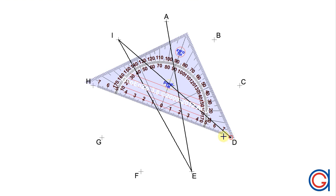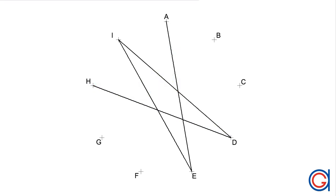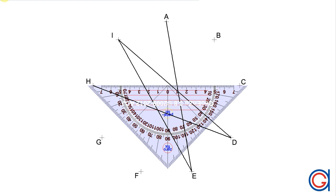We continue joining vertex D to vertex H, skipping vertices E, F and G. Now we join vertex H to vertex C, skipping vertices I, A and B.